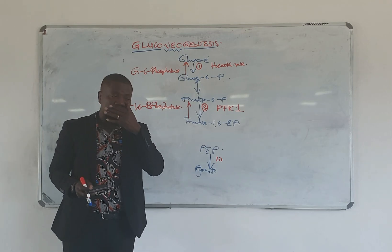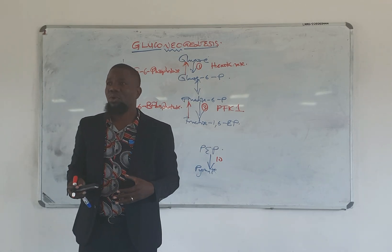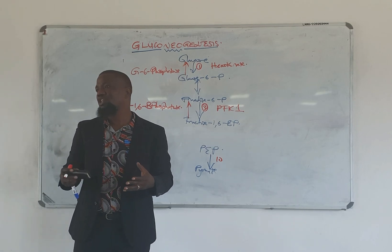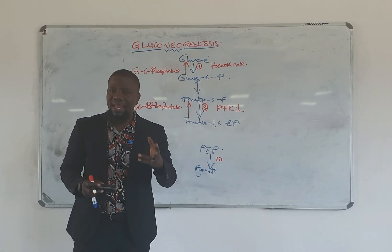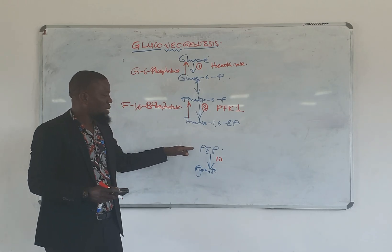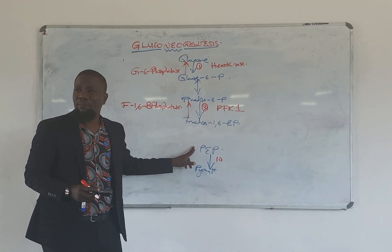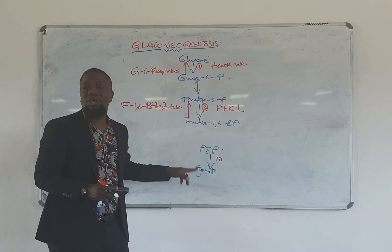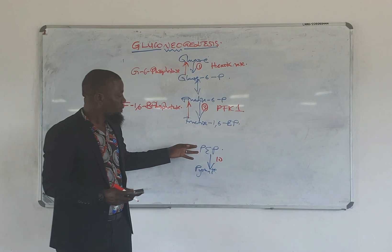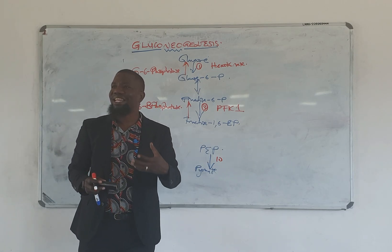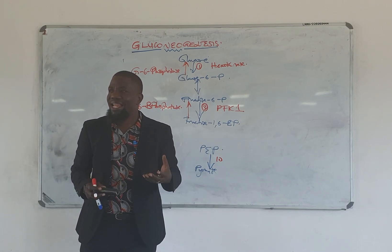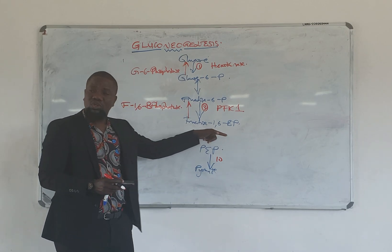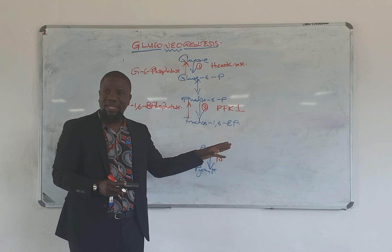First and foremost, what determines whether the reaction is going to proceed is the issue of free energy. The conversion of phosphoenolpyruvate into pyruvate would actually yield a lot of energy, because phosphoenolpyruvate is an enol phosphate — a highly unstable molecule — which will lose a phosphate, adding it to ADP to form ATP.